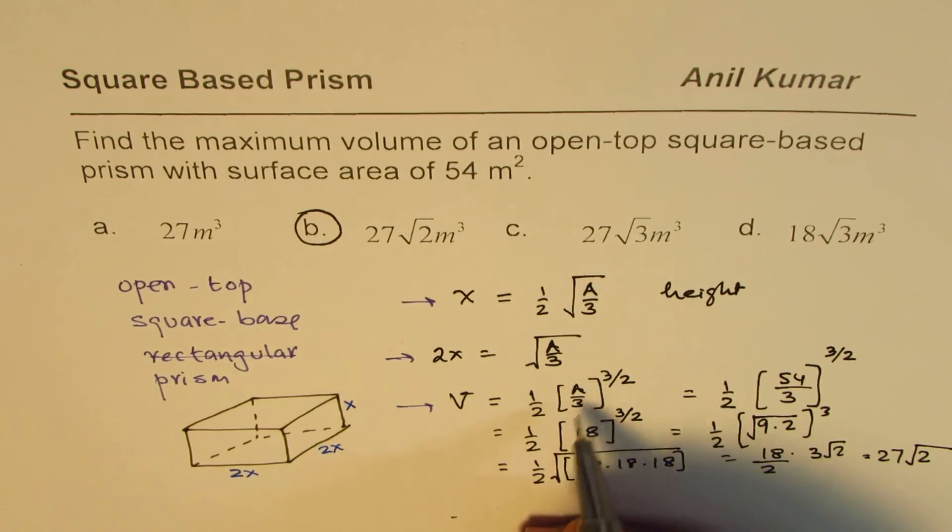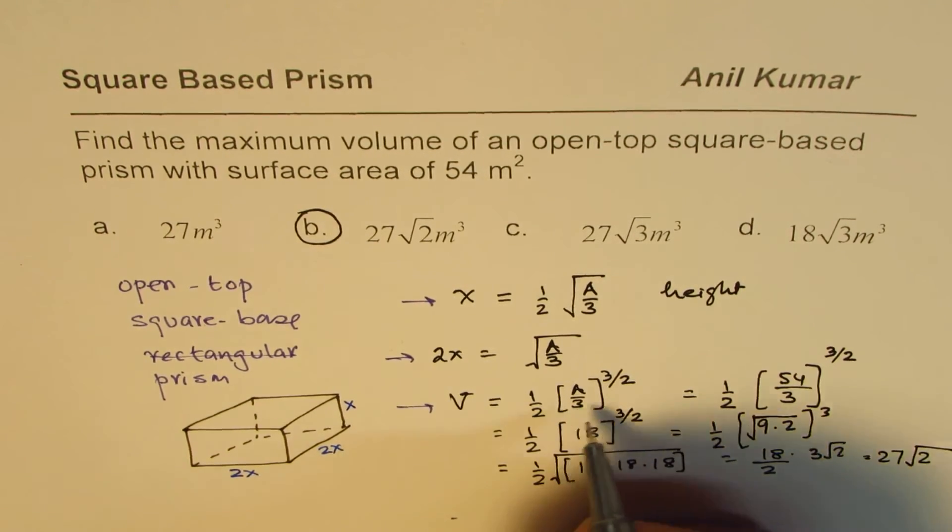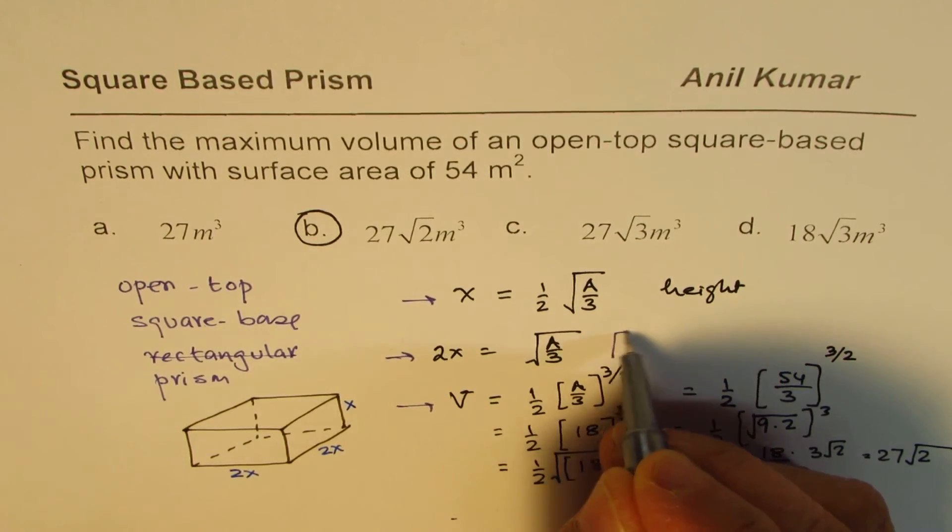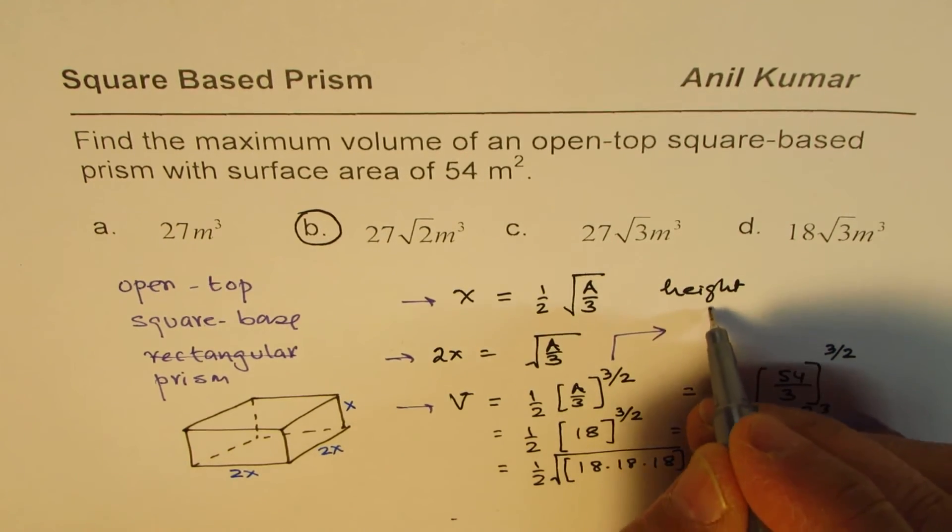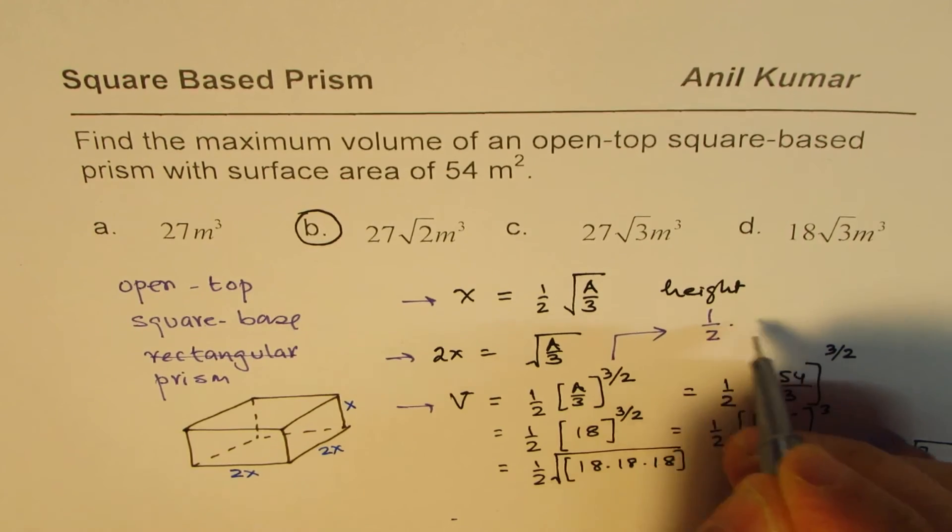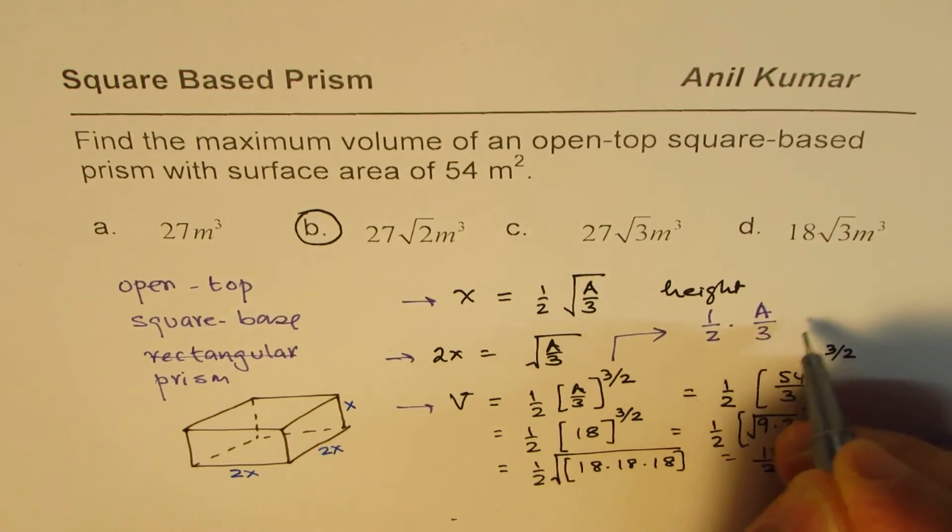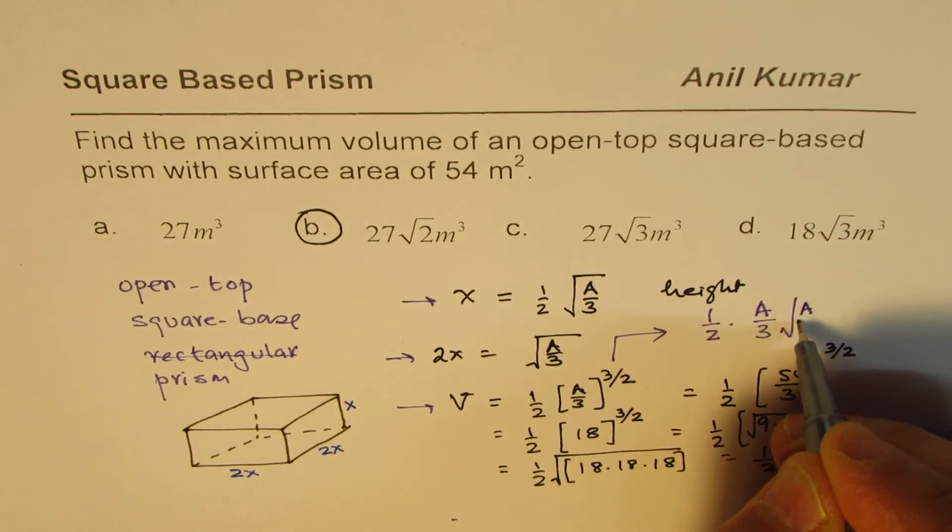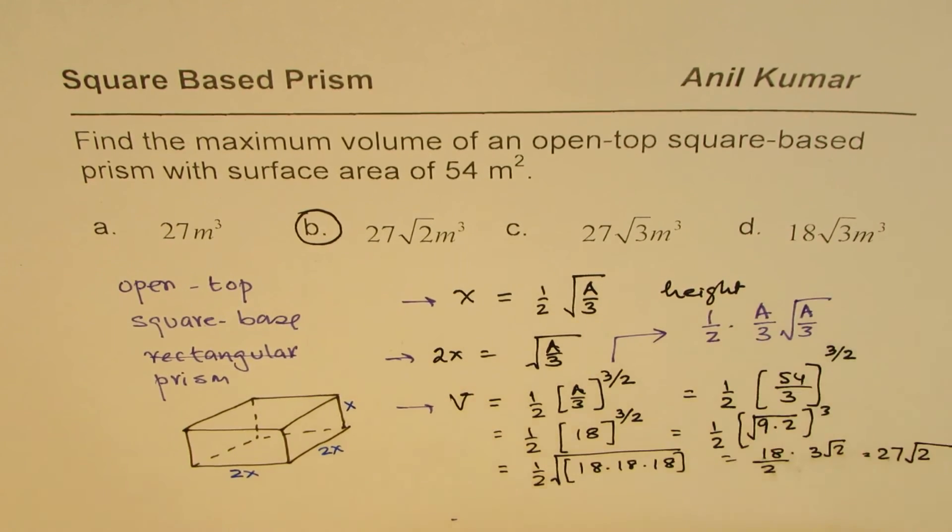Let me rewrite this formula in a different way. This is easy to do, but you could always write this as half times A over 3 and then square root of A over 3, if that helps. So either way, those are the calculations involved to answer this question.